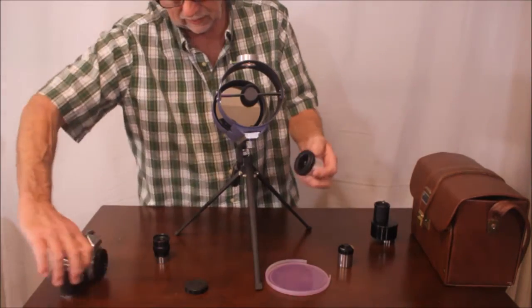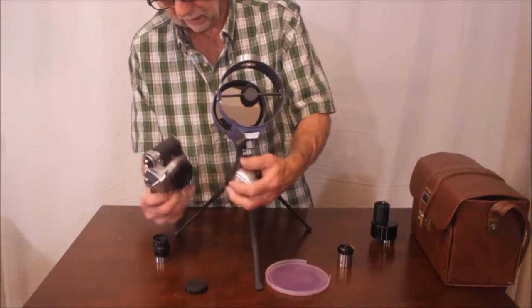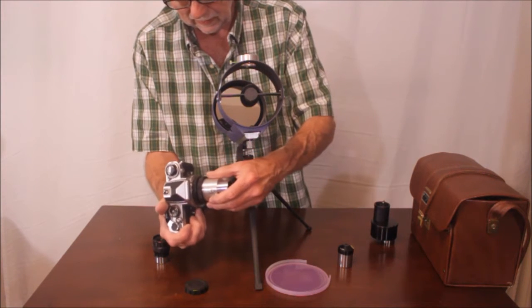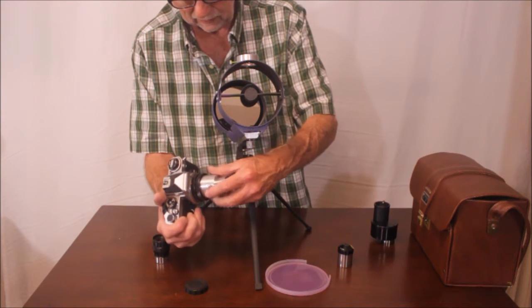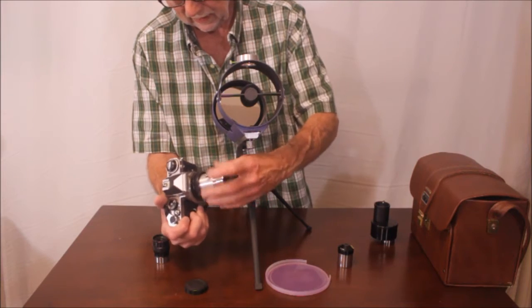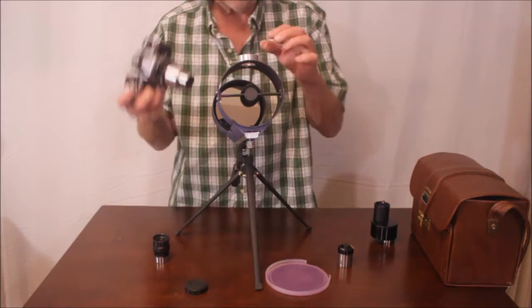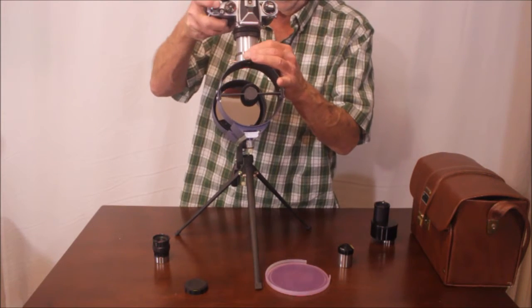Now, the 12mm is inside there. And this is a standard kind of a thread. It works. It's a T-thread. So, that now goes on your camera. This is your old style Nikon camera. Whatever you might have.